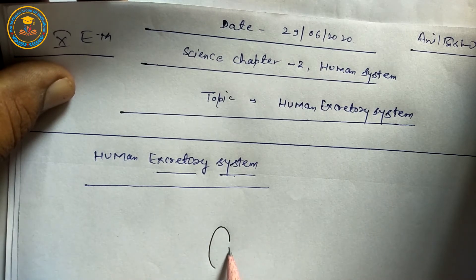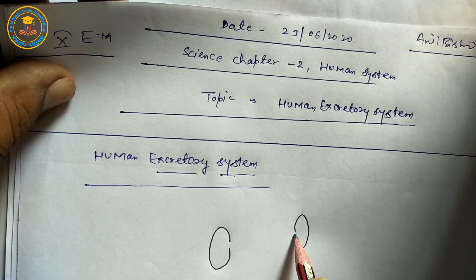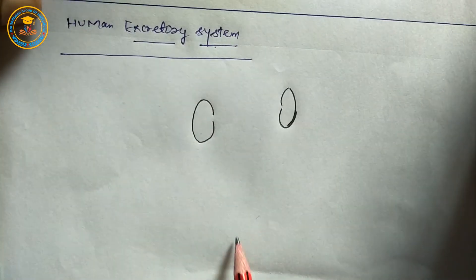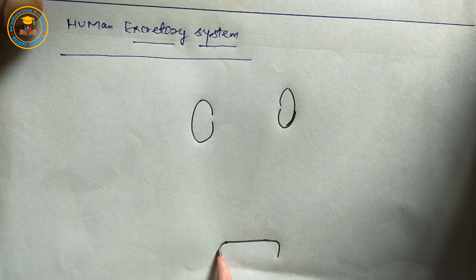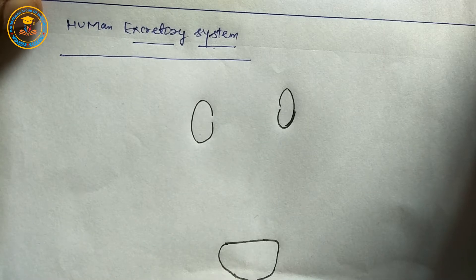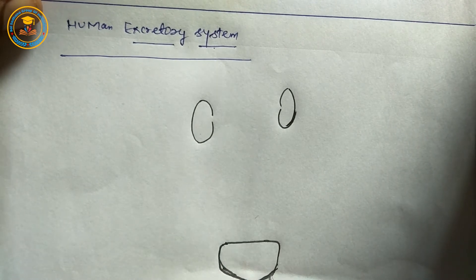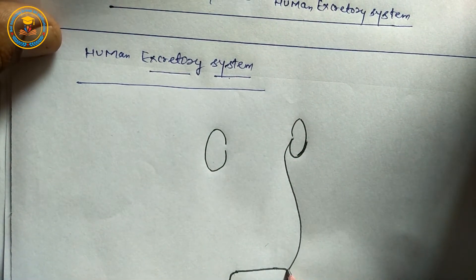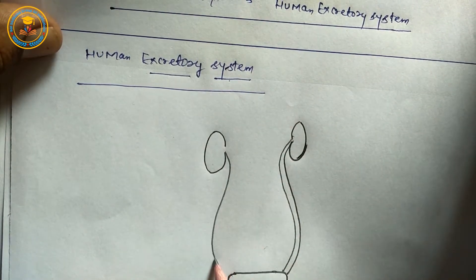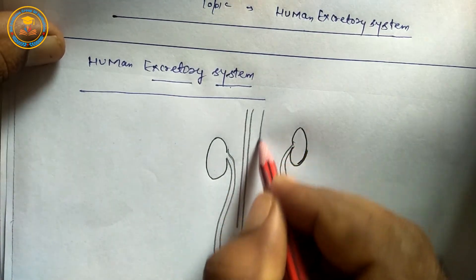First kidney, second kidney. They are bean-shaped — they are Rajma-shaped. Next is the ureter, urinary bladder. This is the urinary bladder. And this is the renal artery, and this is the renal vein.